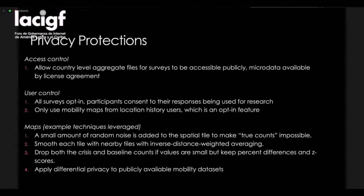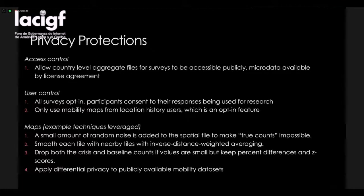One major way in which we protect our datasets is through access control. We will often make a country-level, very aggregated version of a dataset available publicly, but then only make more granular data available to particular universities and nonprofits that we can monitor more closely. That's one high-level way that we protect individual privacy.